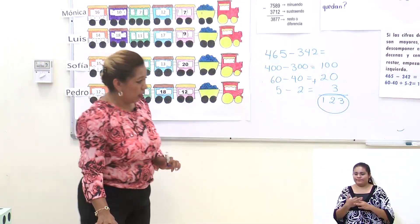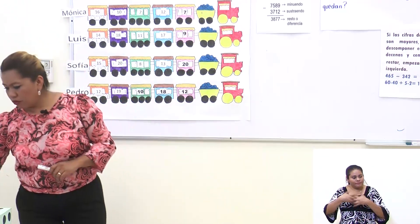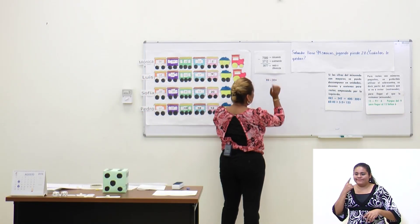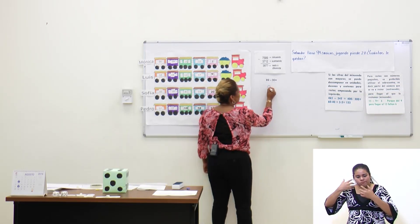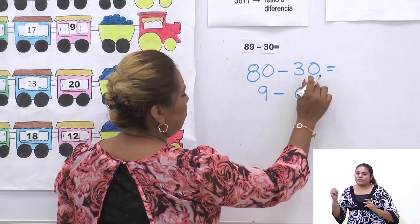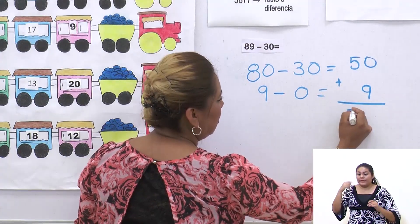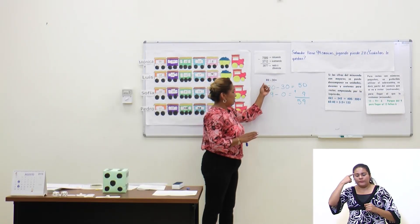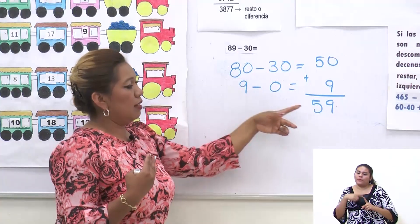Vamos a ver otro ejemplo de cálculo mental. Tenemos 89 menos 30. Descomponemos: 80 menos 30 = 50; 9 menos 0 = 9. Y si realizamos la suma nos da 59. En tu cabecita separas decenas y unidades: a 8 le quito 3 y me quedan 5; el 9 como está solito se lo sumo. Entonces me quedaría 59.